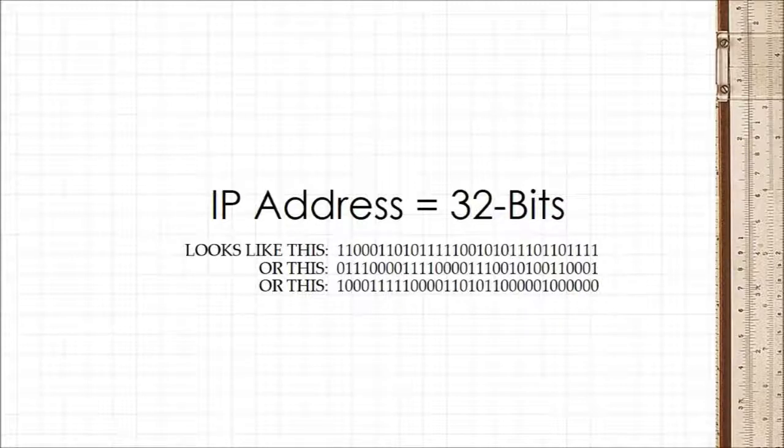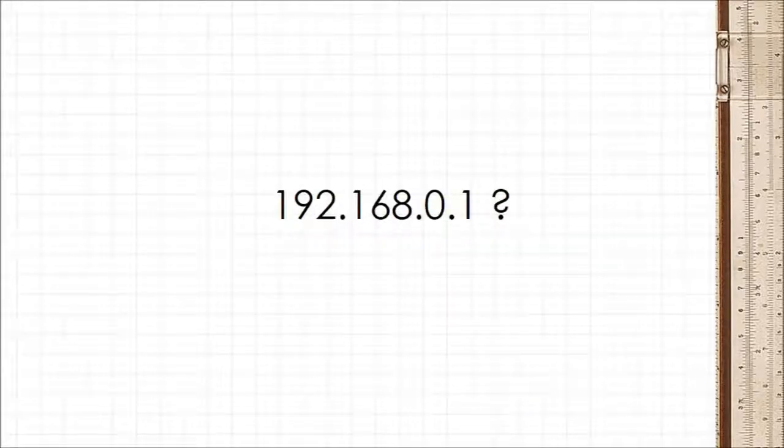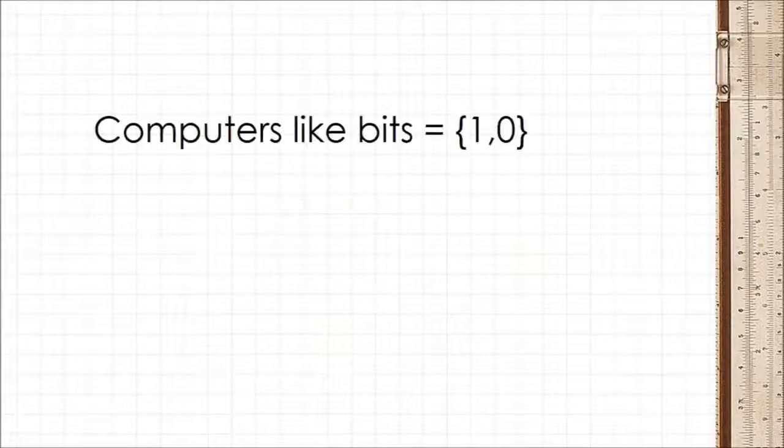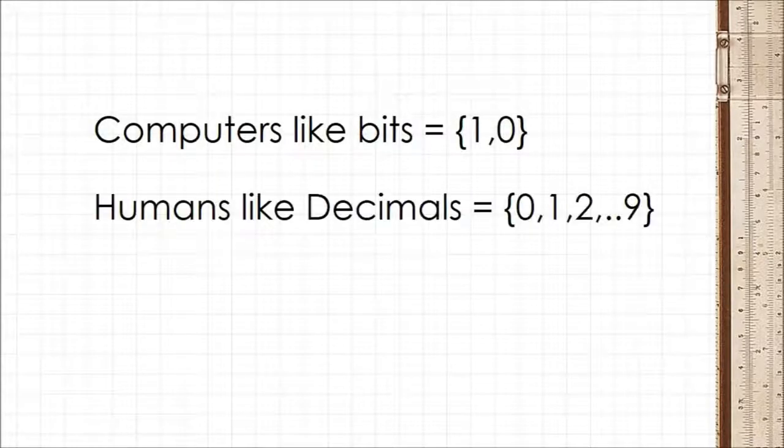But hang on a minute, aren't IP addresses denoted by numbers and dots? Yes they are. You see, while computers deal with ones and zeros, humans prefer regular decimal digits from 0 to 9.